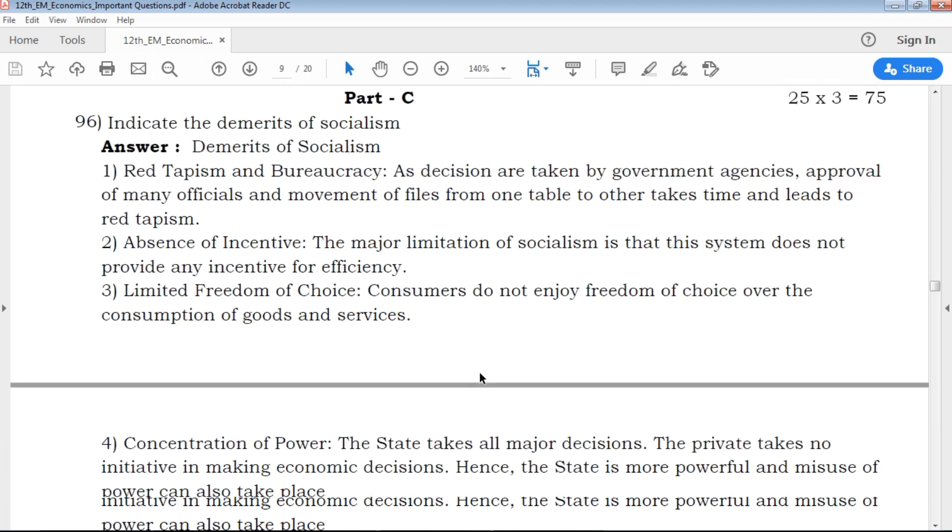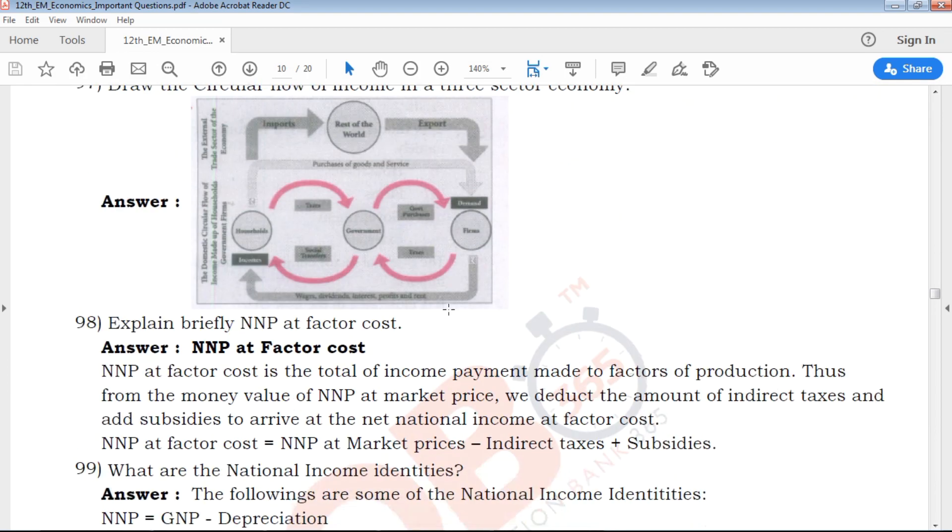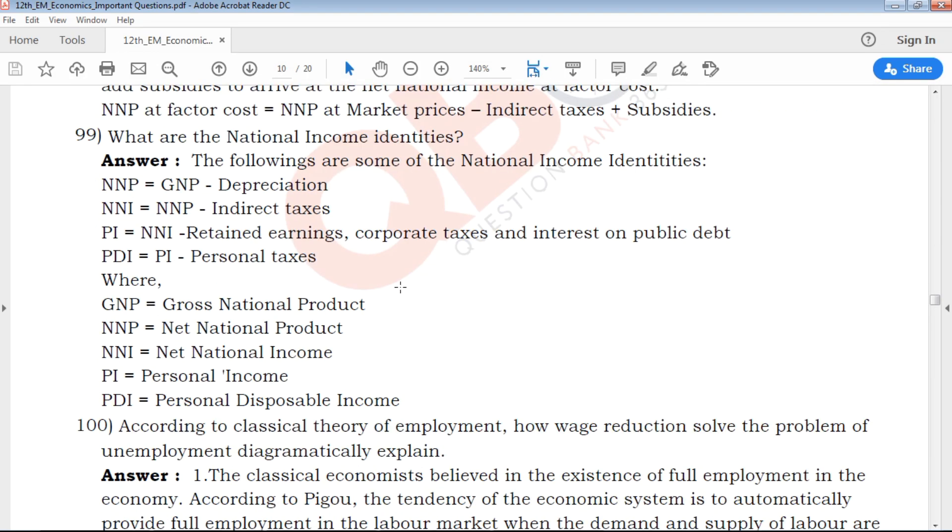Part C has 25 marks. Here are all key answers. Diagram questions. Now, what are the national income identities? All the national income.